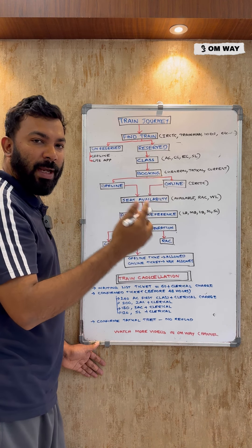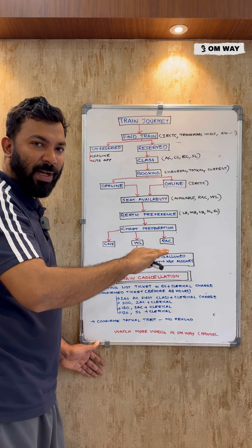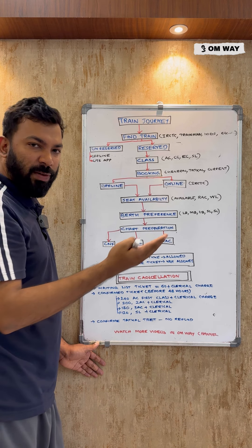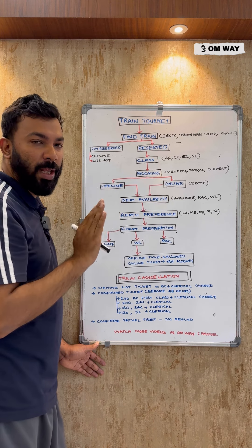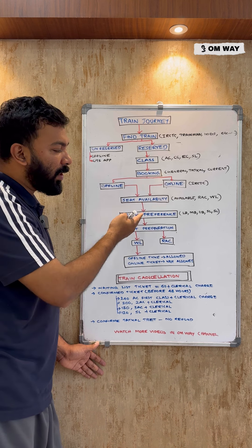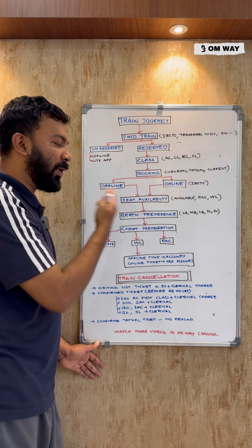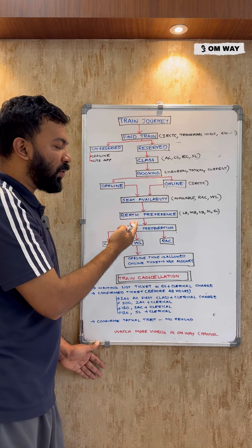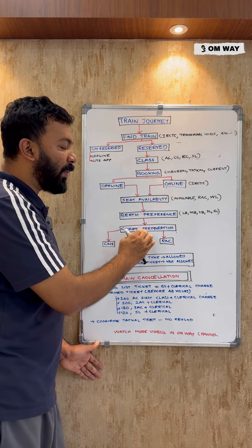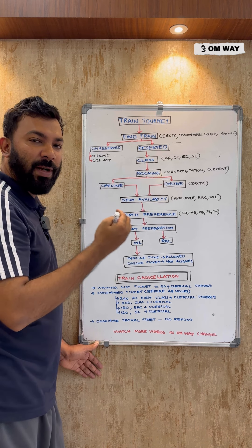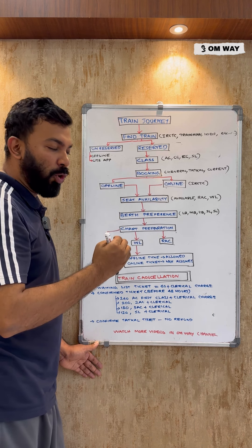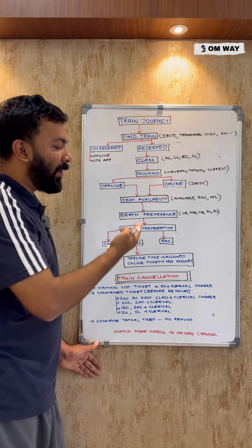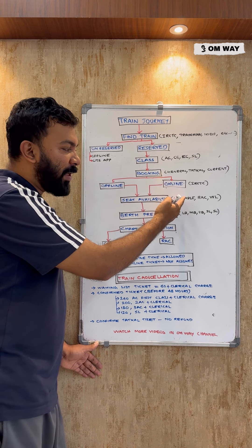We have lower berth preference options: side upper and side lower. If your preferred berth is not available, don't worry. After berth preference selection, the system moves to chart preparation, and you will receive a message once the chart is prepared and your ticket is confirmed.